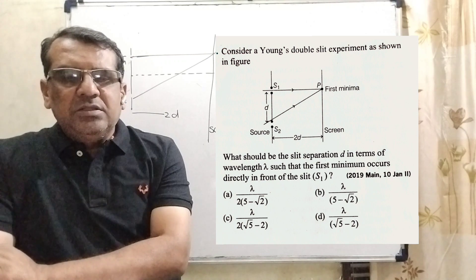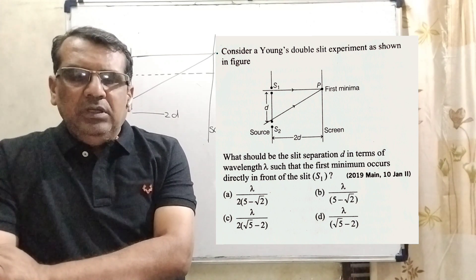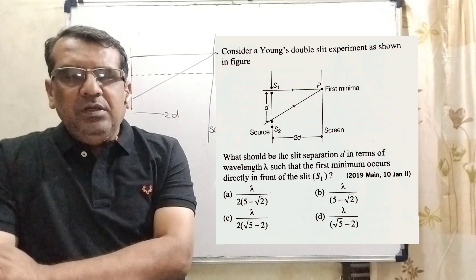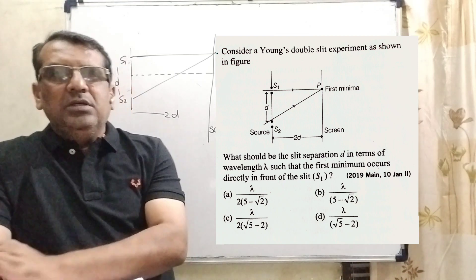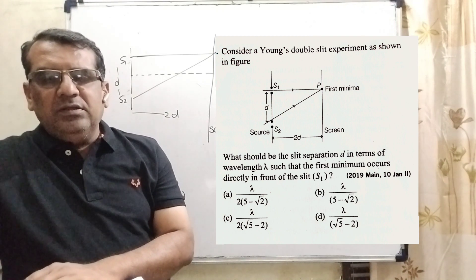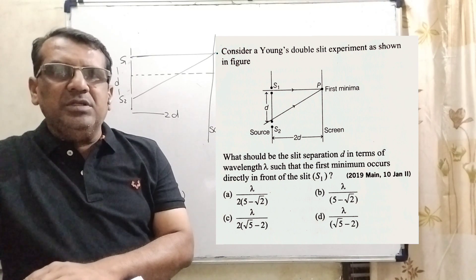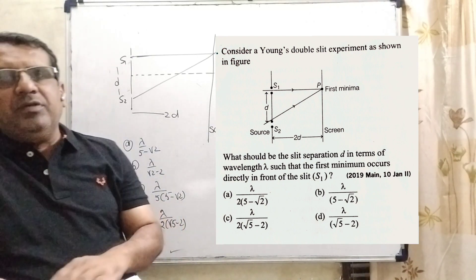Here is the question. Consider a Young's double slit experiment as shown in the figure. What should be the slit separation small d in terms of wavelength lambda such that the first minima occurs directly in front of the slit S1? Here we have given four options.